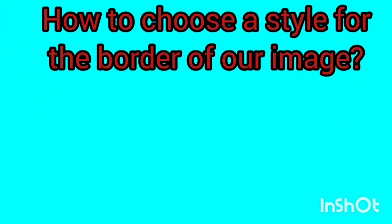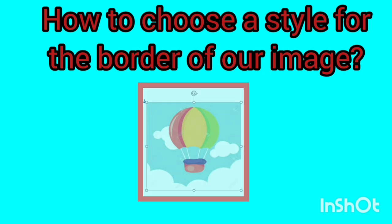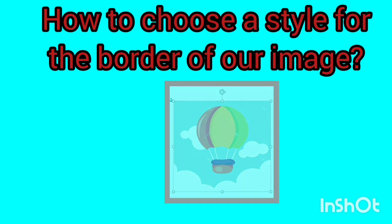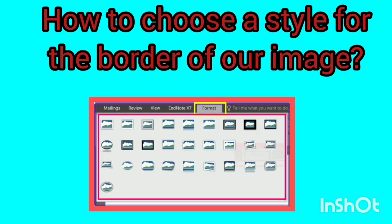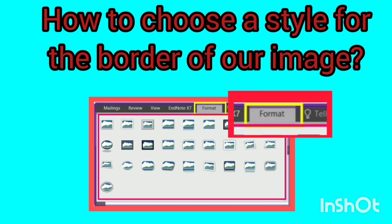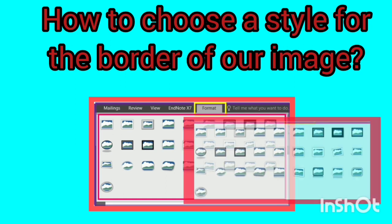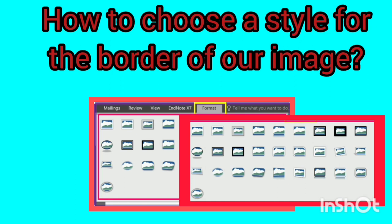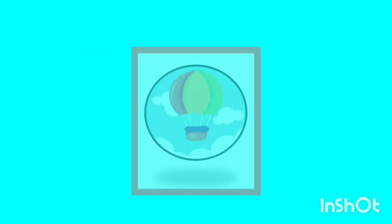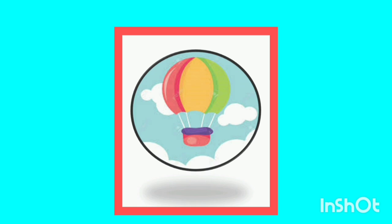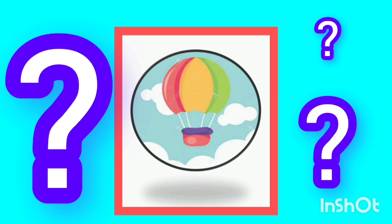We want to learn how to choose a style for the border of our image. Click on the desired photo once to select it. Then the Format tab marked with a yellow box will be activated automatically. Click on the small triangle marked with pink color and select the desired frame. I chose this frame for my photo. Tell me in the comments what frame you chose.